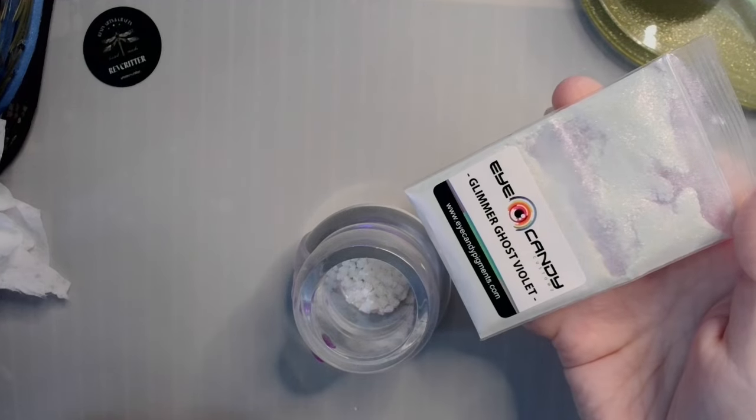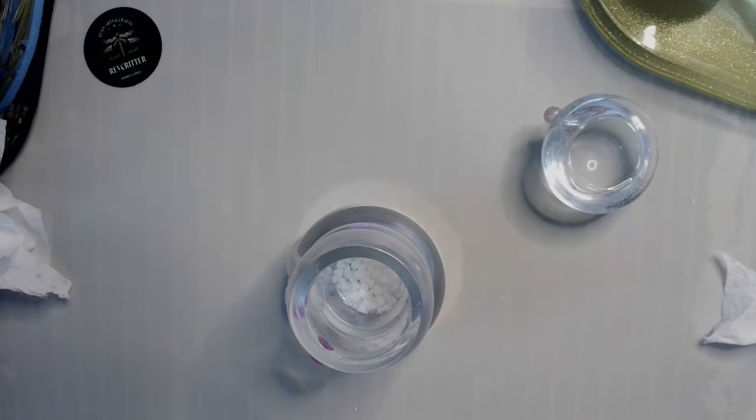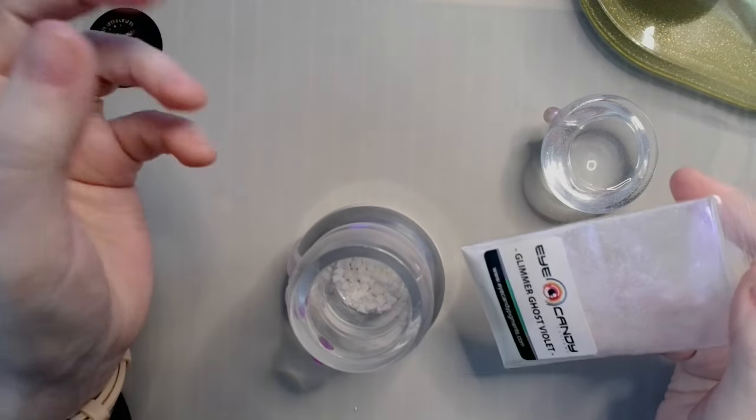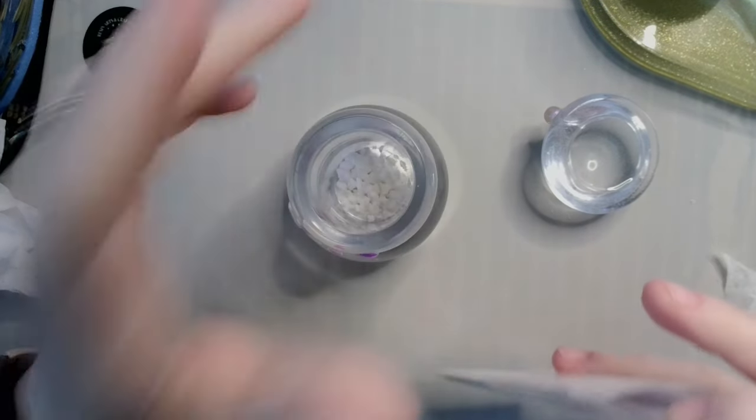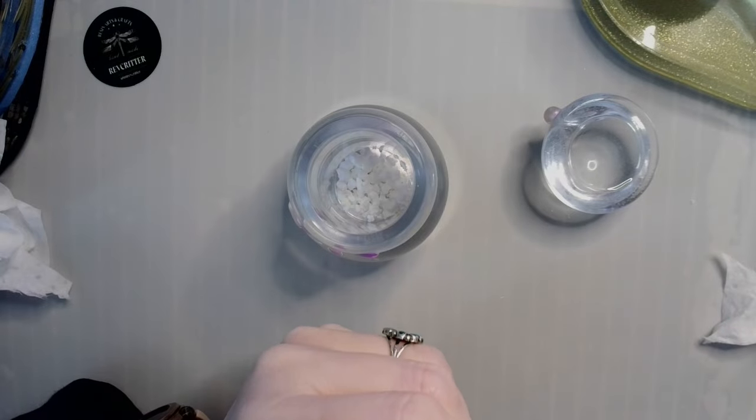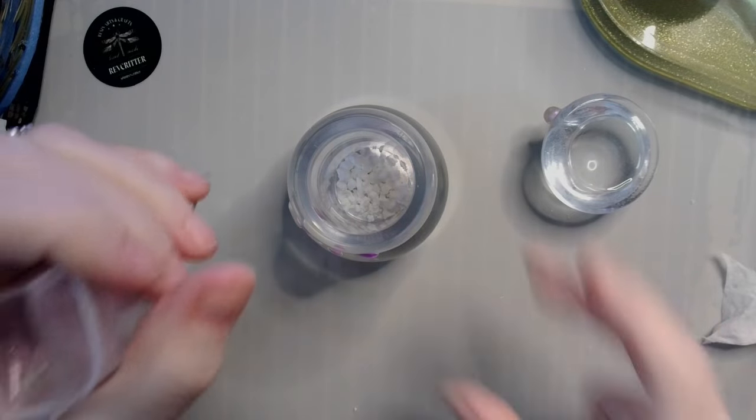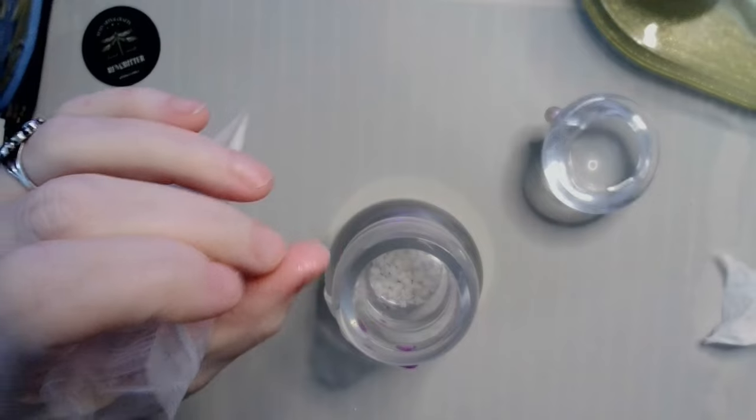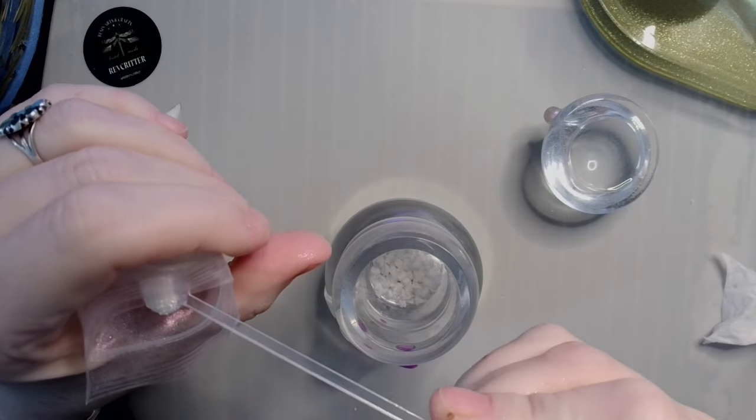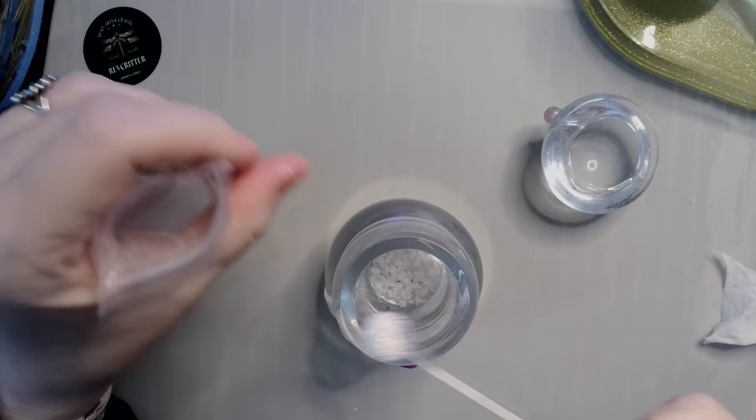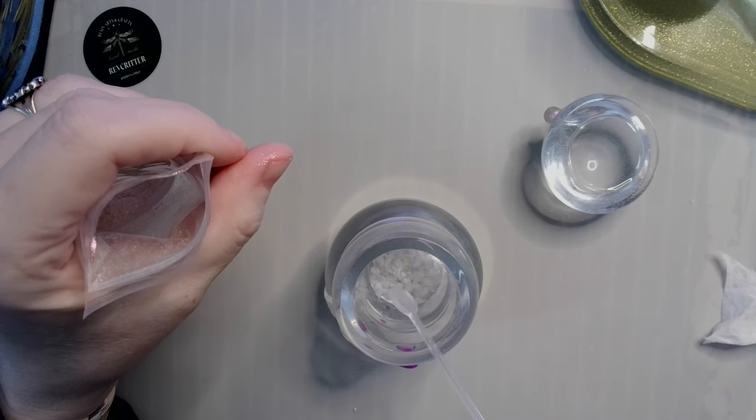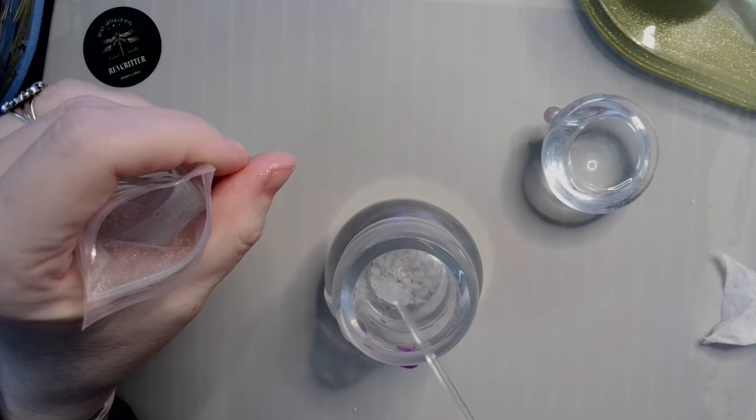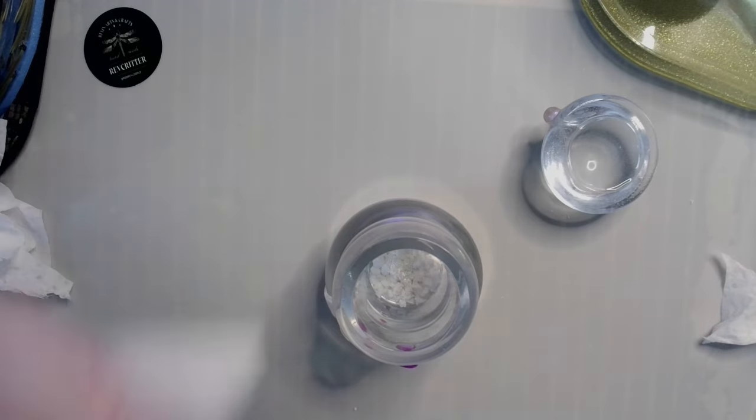When I say subtle-ish, this is what I mean. I'm going to be adding a little bit of my Eye Candy Glimmer Ghost Violet mica powder. Now this is slightly less chunky than the Galactic Ghost Violet, which has large chunks of flake in it. And the Glimmer is a little bit more on the subtle side. So not much. Just tap tap tap. And put that in there.